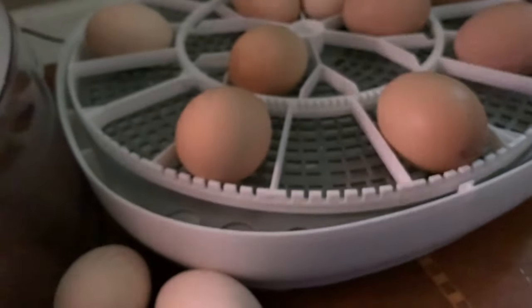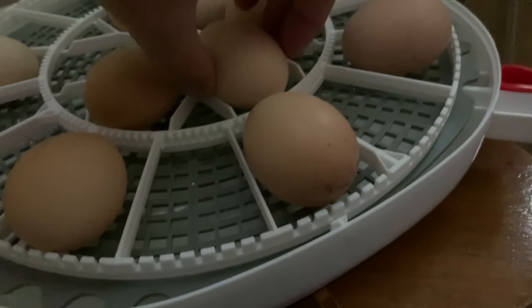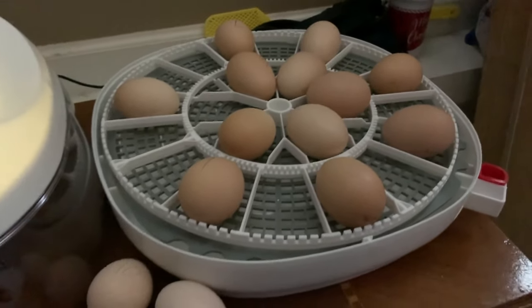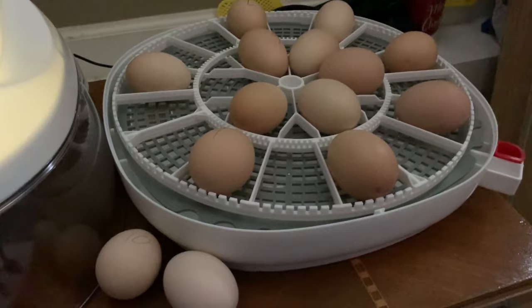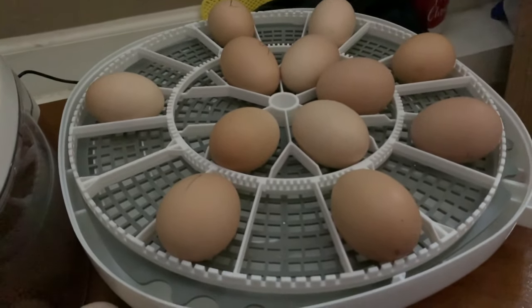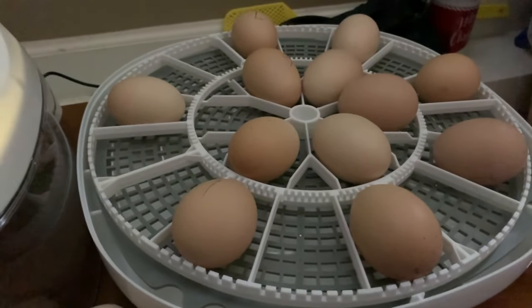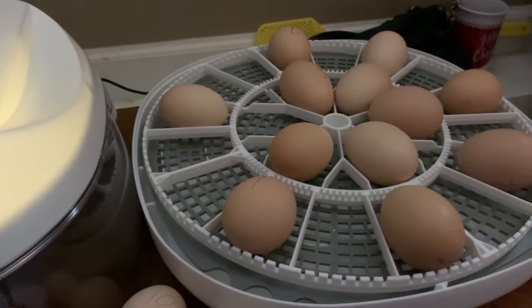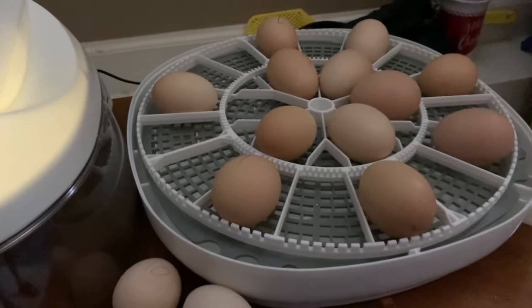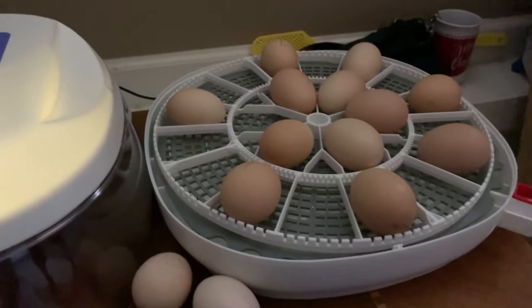So I've got 12 out of 14 eggs. I've got one rooster and 13 hens, and they gave me 12 fertile eggs. Now that doesn't mean that all 12 will hatch. It just means I've got 12 fertile. So on day 14, I'll come back with another video and candle again. And I'm going to get this lid back on so they can keep incubating. Thanks.